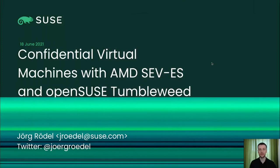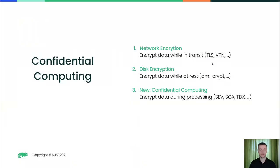First of all, what is confidential computing? When you want to keep your data confidential you usually encrypt it. There is lots of technology for this — for example, while your data is in transit you can use network encryption with TLS or VPNs. When your data is at rest you use disk encryption, for example DMCrypt or other related technologies.